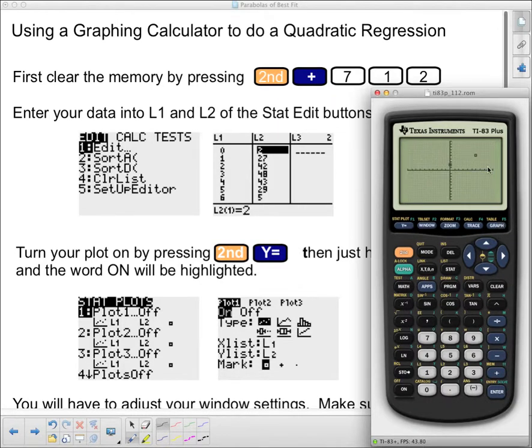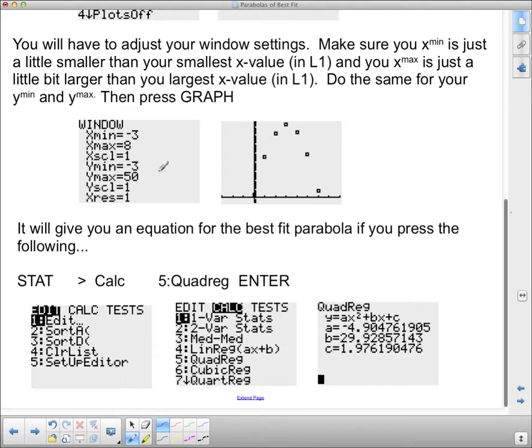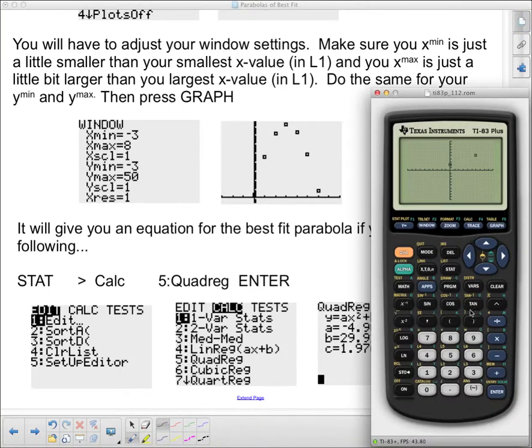So now if I press graph, you'll notice I get a couple of points, but I don't get enough of them. I've got the same problem here as I had with the Desmos calculator. I've got to adjust my window settings. When we adjust our window settings, we press window, and we go a little bit lower than our minimum. So I'm going to use negative 3 again. And a little bit higher than our maximum, and remember, this is what we put in list 1, so I'm going to use 8. And then I'm going to use negative 3, which is a little bit smaller than 0. And our maximum y value is 48, so I'm going to go to 50. Now when I press graph, I should have all of those points there.